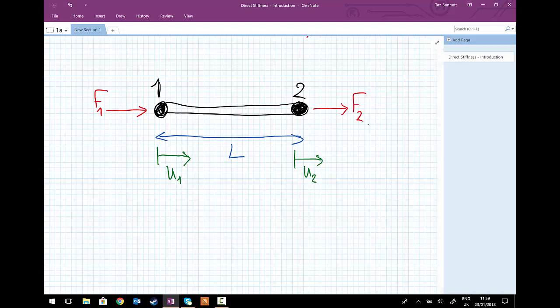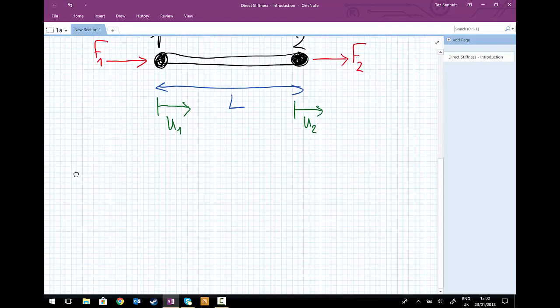What we're going to do now, is with this element, is we're going to split this into the free body diagrams for the bar on its own, and the nodes on their own. So first of all, we're going to take node 1, and we're going to draw the free body diagram for node 1.